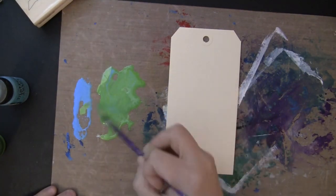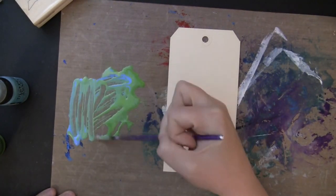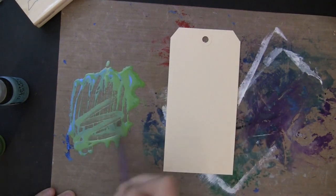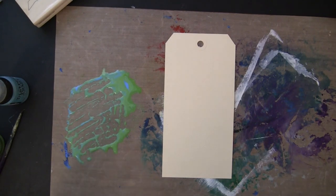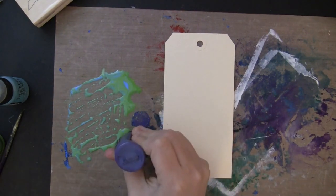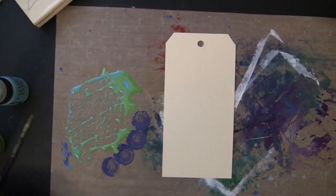So I'm just pressing these and mixing these together on my craft mat, and then I'll be pressing my tag into the color. And here's where I'm going to add that darker blue, the Chipped Sapphire color.